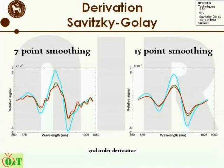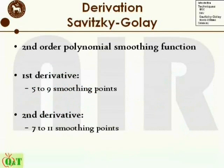As the signal-to-noise ratio decreases when a higher derivative is wanted, a larger number of smoothing points or lower-order polynomial smoothing function should be used. To our knowledge, using the second-order polynomial smoothing function, both for the estimate of the first and second derivative, is sufficient. Using five to seven points in the smoothing for estimation of the first derivative is adequate, while it should be increased to seven to eleven points for the estimate of the second derivative.